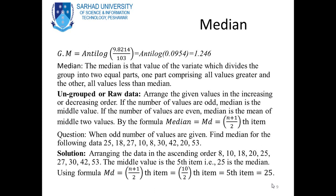Median is that value of the variate which divides the group into two equal parts — one part comprising all values greater, the other all values less than the median. It is known as the mid-value of the class. For ungrouped or raw data, arrange the values in increasing or decreasing order. If odd, the median is the middle value; if even, the median is the mean of the two middle values. By formula: Median = the (n+1)/2-th item.